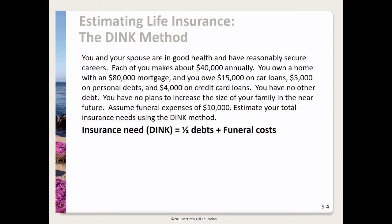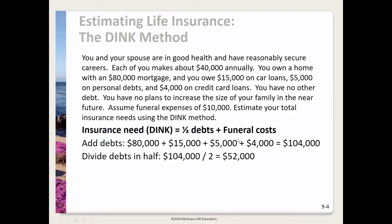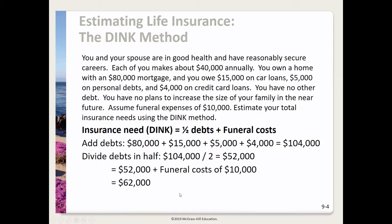You can divide each debt by two then add them, or add all debts together and divide by two. Adding the mortgage, car loans, personal debts, and credit card loans gives $104,000 in total debts. Dividing by two gives $52,000. Adding the $10,000 funeral costs to the $52,000 gives an insurance need of $62,000.